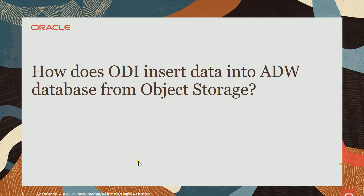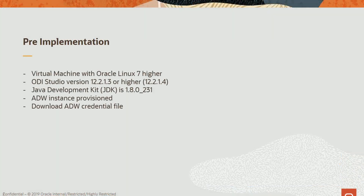To implement an ODI package, we need one virtual machine with Oracle Linux operating system version 7 or higher, and install ODI Studio version 12.2.1.3 or higher, because these versions support working on Oracle Cloud services such as Oracle Object Storage or Autonomous Data Warehouse. The JDK development kit should be version 1.8.0. You also need to make sure you provision an ADW instance and download the ADW credential file to your environment.